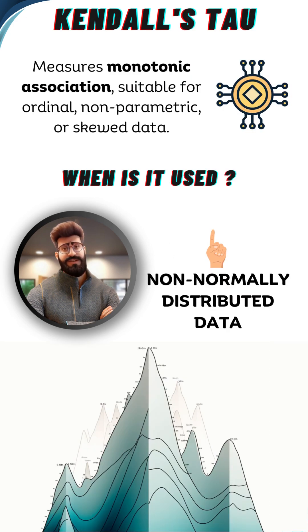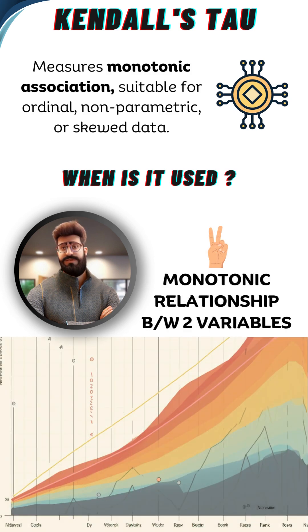Kendall's rank correlation assesses the strength and direction of the monotonic relationship between the two variables. It measures the similarity of orderings of the data points rather than the specific data. It must have a monotonic relationship between two variables.